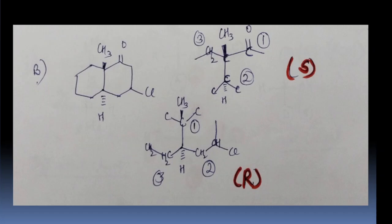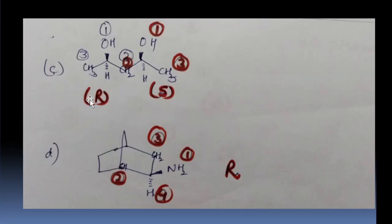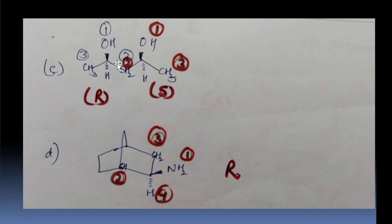Next example C. Here we have 2 chiral centers. We can number from either side because both ends have CH3. The structure is CH3, C, CH2, C, CH3, with OH and OH. No preference can be given to either side so we can start from any side. For this carbon: OH is 1, CH3 is 2, CH2 is 3, and H is 4. Going 1, 2, 3, 4 we get R.